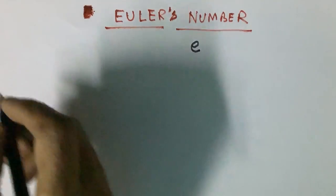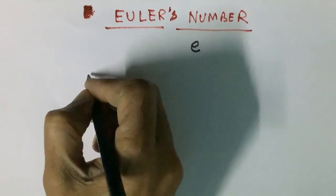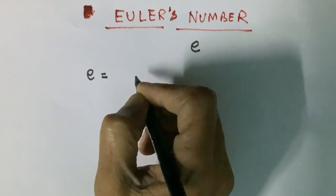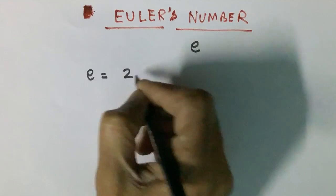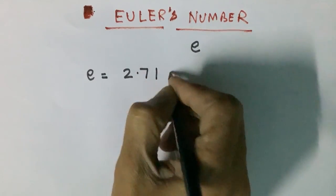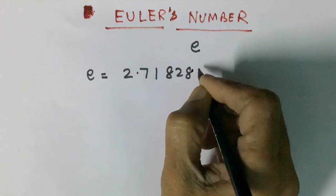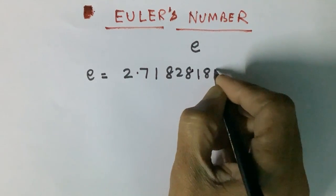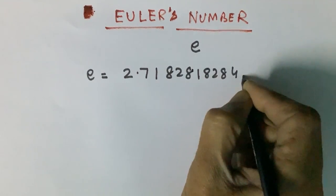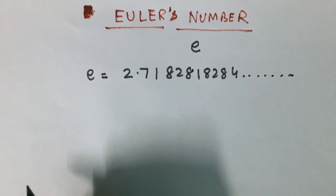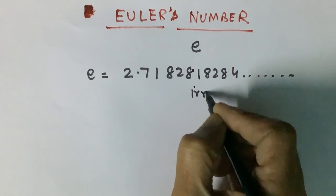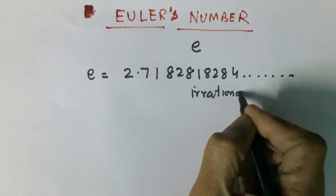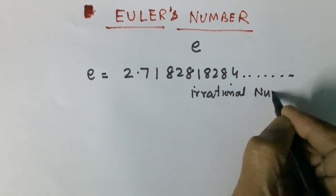First, we will look at the value of this number. This number is equal to 2.7182818284 and so on. It is never ending. It cannot be exactly represented by a fraction number, so it is an irrational number.